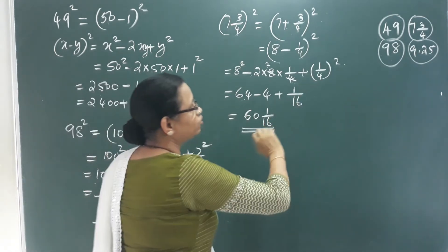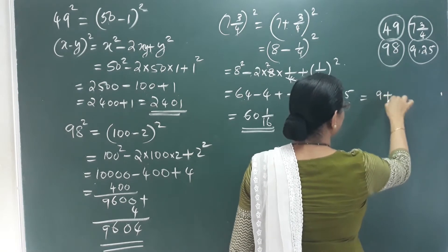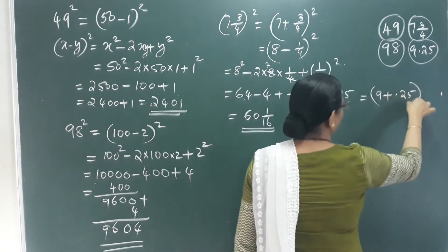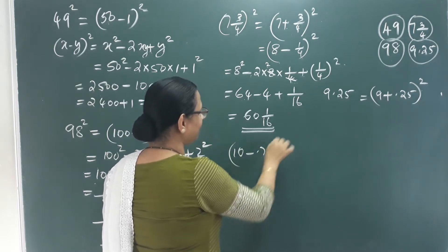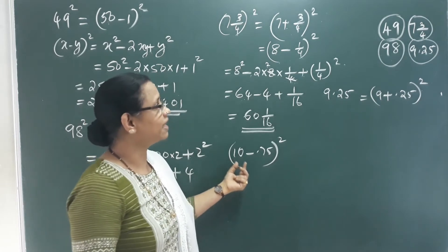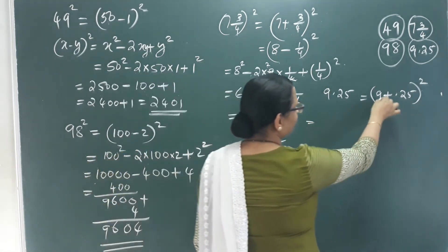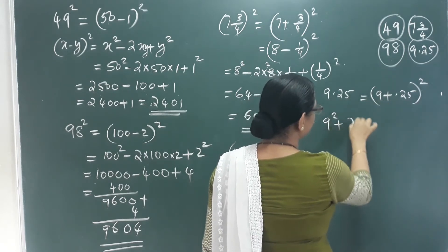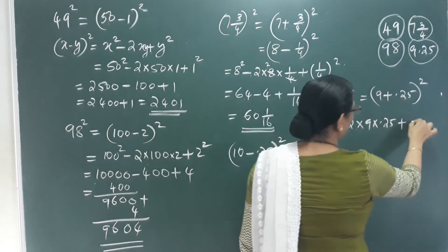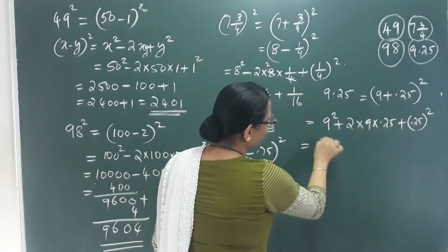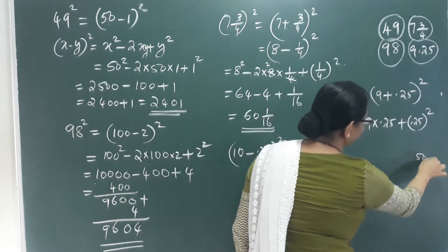Now for 9.25: 9.25 can be written as 9 plus 0.25, whole square. Alternatively, we can write it as 10 minus 0.75, or 9 minus 0.25. We need to multiply. We use 2 into 25, keeping 1 decimal place, so 0.25 is our y value.